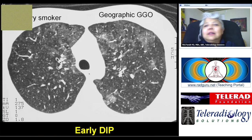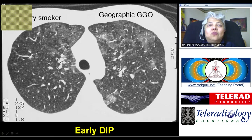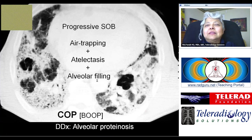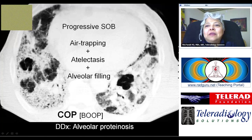This is an early DIP in a smoker with ground glass opacities, heterogeneous lungs, bronchial wall thickening, and micronodules — way too many to be within a secondary pulmonary lobule. This is a patient of cryptogenic organizing pneumonia following a viral infection. You can see confluent lobules of air trapping, some areas of lobular atelectasis, and ground glass opacities. This was previously known as BOOP. Without knowing the history, one cannot distinguish this from alveolar proteinosis.